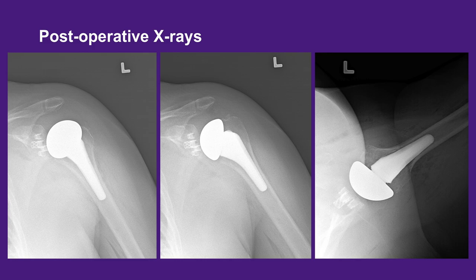The postoperative x-rays obtained in the operating room include an AP view with internal rotation, an AP view with external rotation, and an axillary view. These three views allow the surgeon to evaluate component position and alignment. These x-rays show the components to be in good position and alignment. On the axillary view, the humeral head is well-centered on the glenoid component. Immediately after, the patient's operated upper extremity is immobilized in a sling.